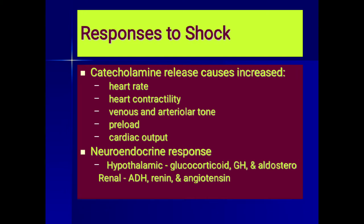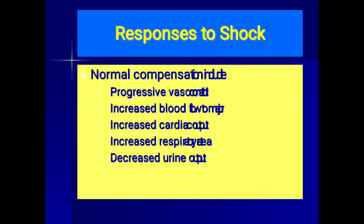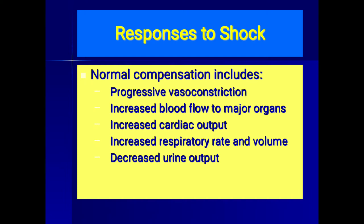The neuroendocrine response stimulates the hypothalamus — glucocorticoid, growth hormone, and aldosterone mechanisms — and the renal system stimulates ADH, renin, and angiotensin mechanisms. Normal compensation for early or compensated shock includes progressive vasoconstriction, increased blood flow only to major organs, maintained cardiac output at a bare minimum, increased respiratory rate and volume, and decreased urine output to conserve fluid.